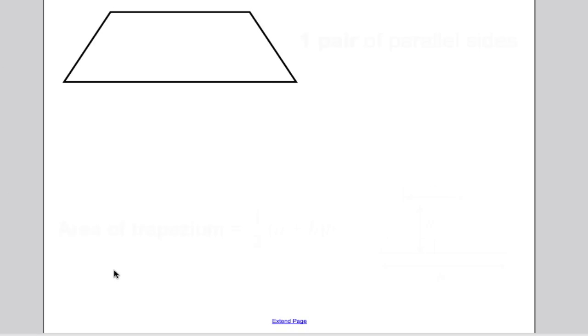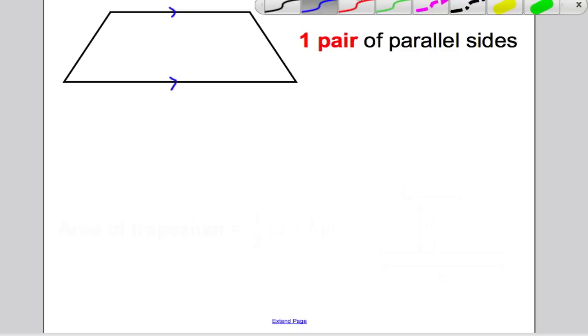There is a picture of a trapezium. The key thing about a trapezium is it has one pair of parallel sides and the other two sides are not parallel. So it's a quadrilateral, a four-sided shape with one pair of parallel sides. Now it's always important to label your parallel sides because they're going to be important later. So I would always label them with an arrow to show which ones are parallel.